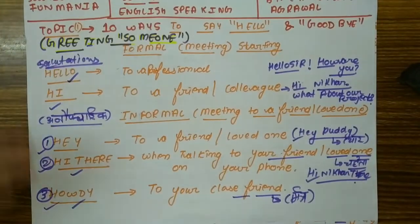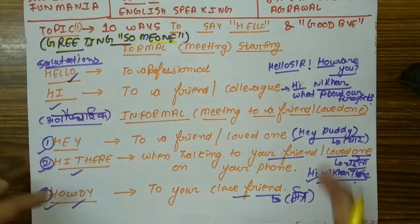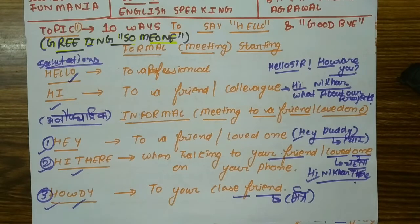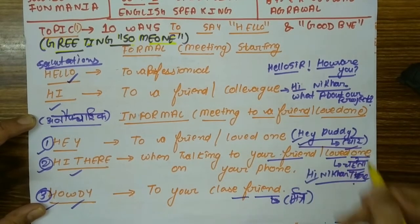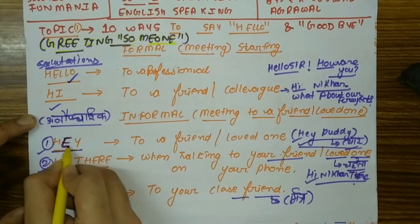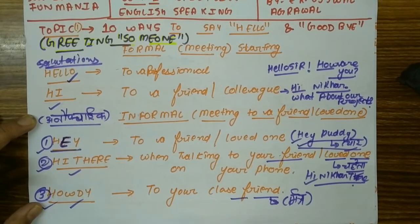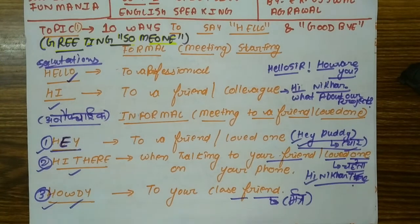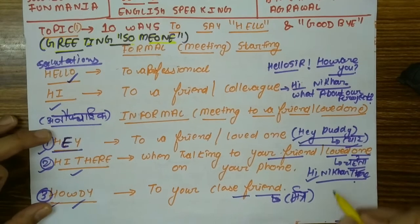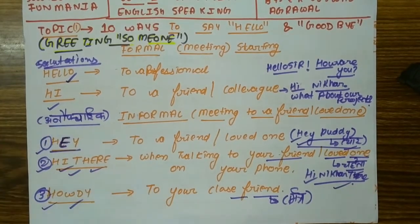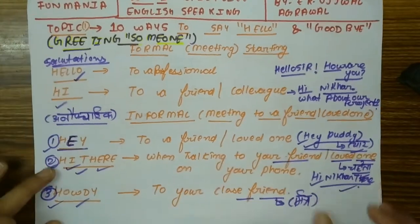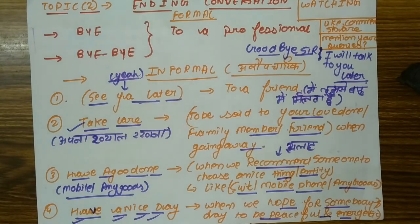So this was the salutations. Let me repeat: professionally we say 'Hello sir, how are you?' and 'What about our project?' Informally we say 'Hey, how are you?' For friends we use 'Hi there' — whenever we are talking to friends who are far away, we say 'Hi there, how are you?' We use it informally. 'Howdy' we use for close friends.